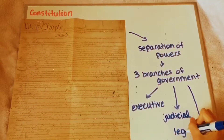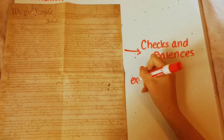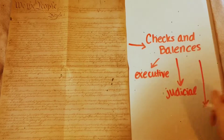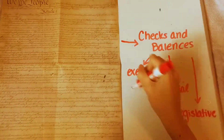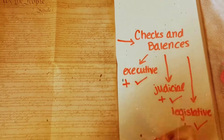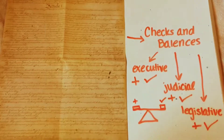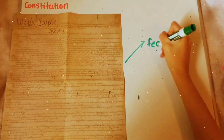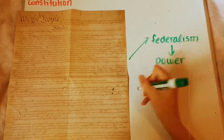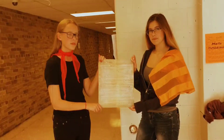Each branch had their own individual role in government. Another addition was to have checks and balances, so each branch of the government had some measure of influence over the other branches in order to keep them in check and to avoid one having too much power. The last addition was the concept of federalism, which is the division of governmental power between the nation and the state.